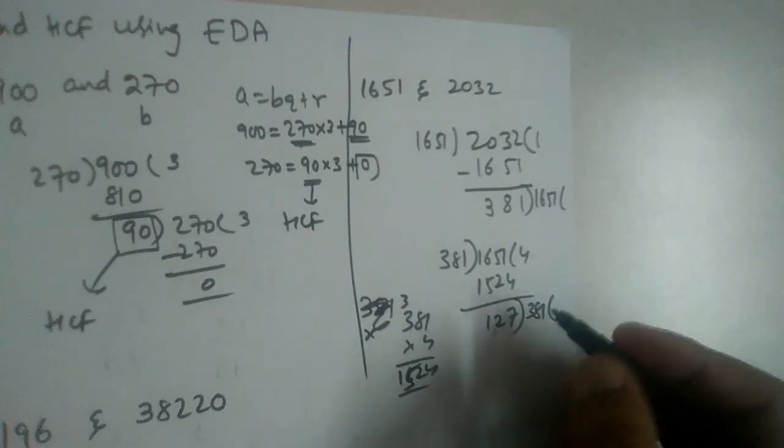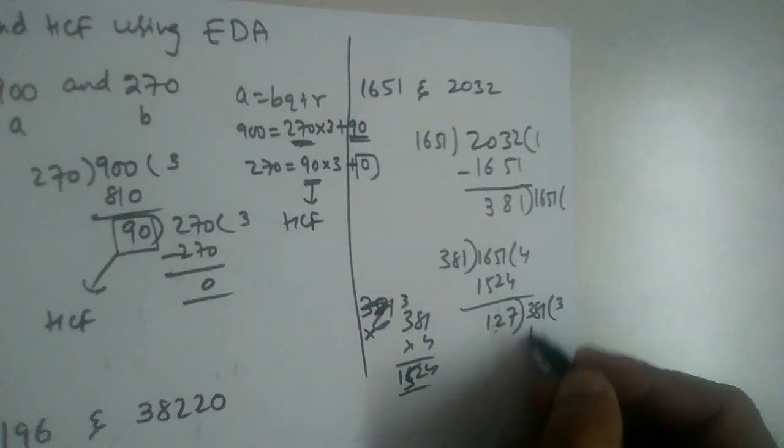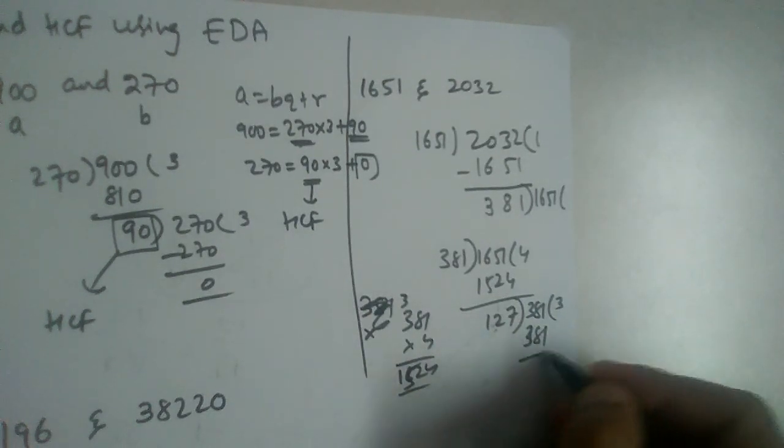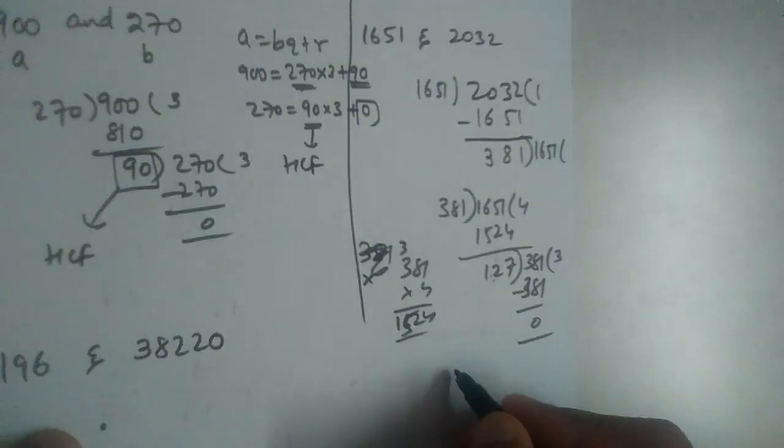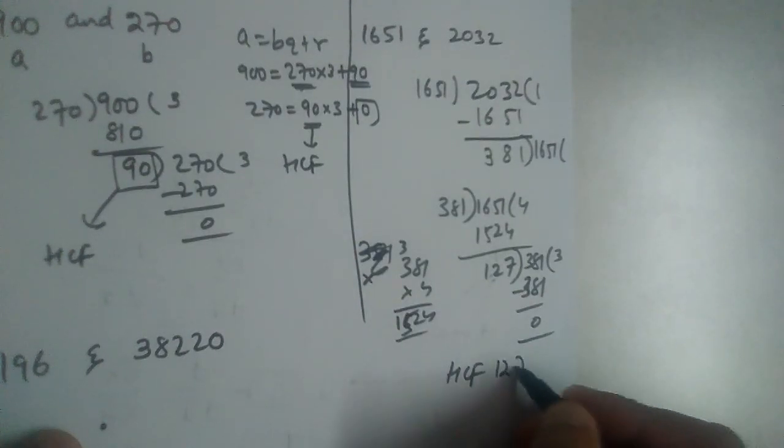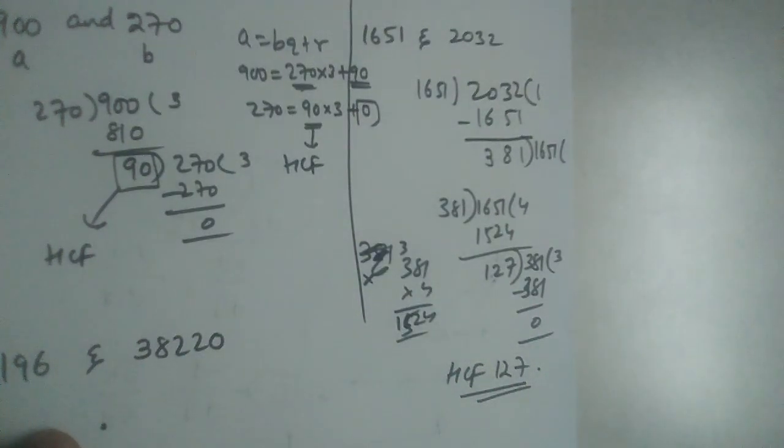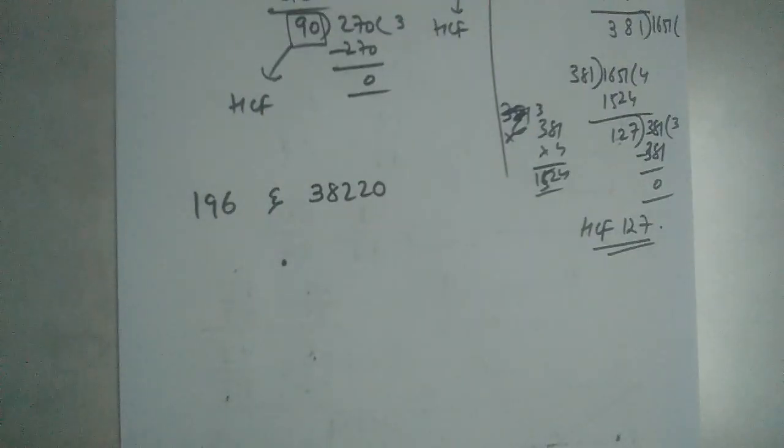Now 381 should be divided by 127. 3 times 127 will give us 381, so what is HCF? 127.